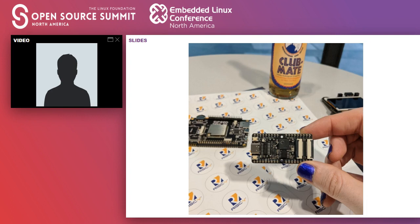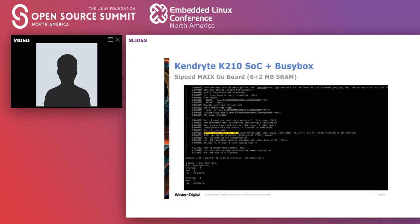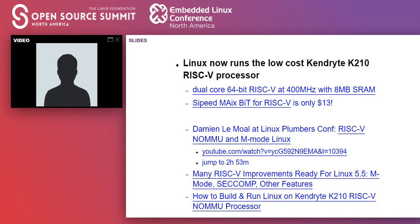One of the quite exciting options right now is a board with the Kendryte K210 system-on-chip from a company called Sipeed. Last year and this year, people including Damien Lemal from Western Digital have been hacking to get this thing to run Linux. The catch is it only has 8 megabytes of SRAM. You can get the Sipeed Maixbit board for only $13 — it's a dual-core 64-bit RISC-V processor running at 400 MHz. It has an MMU, but the MMU is an older spec not supported by Linux.